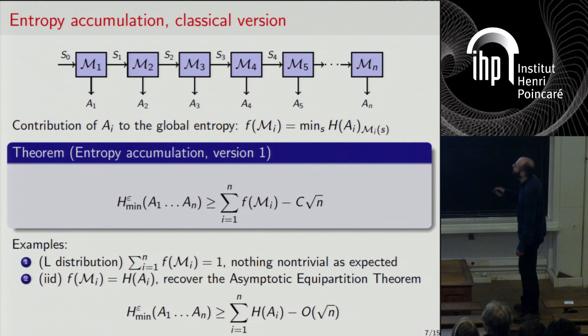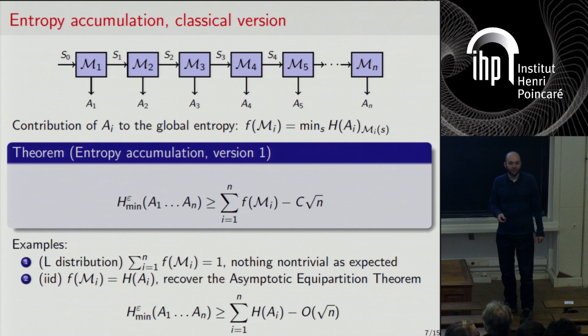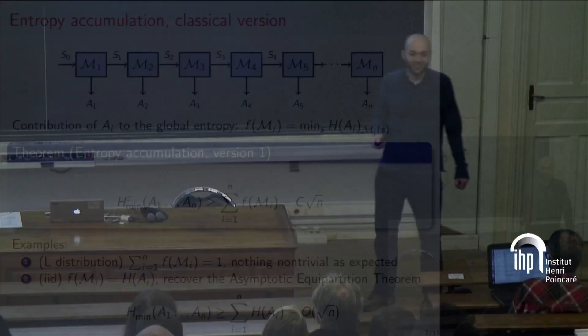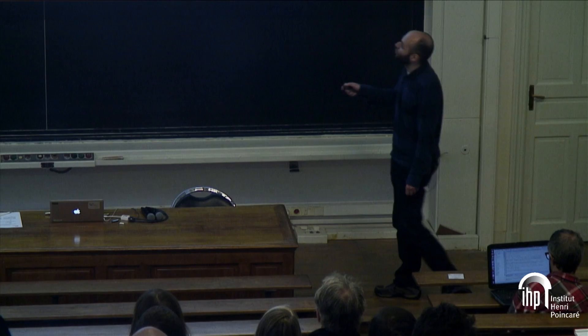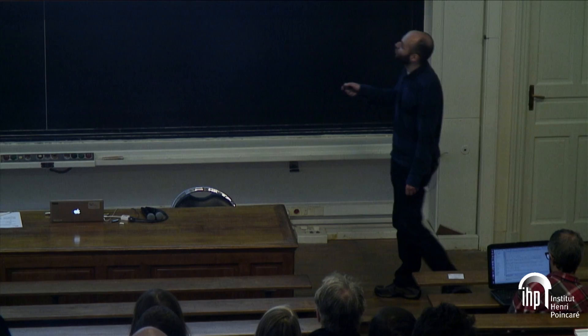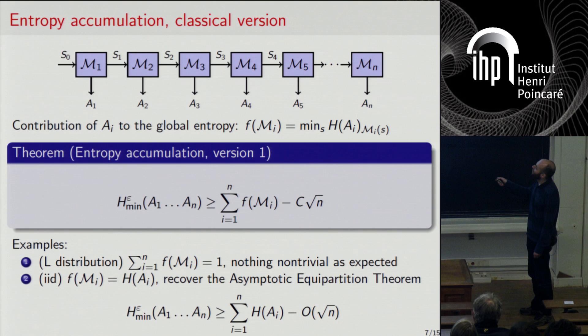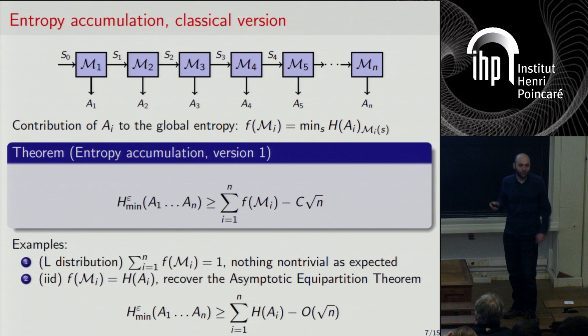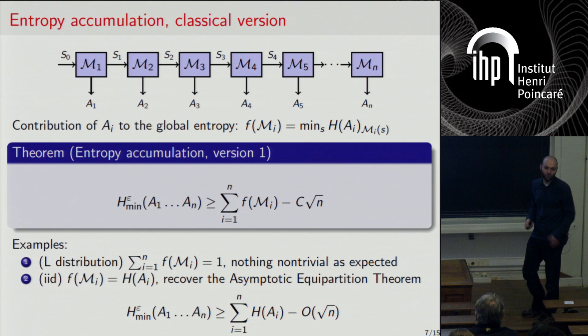Audience question: could there be more than one set of maps? Yes, of course — you can take the map which gives you the best bound. You could take maps that give very bad bounds, of course, but as I said, in the applications to cryptography there is a natural choice for these maps, which is the physical implementation — the way the A_i's are generated.